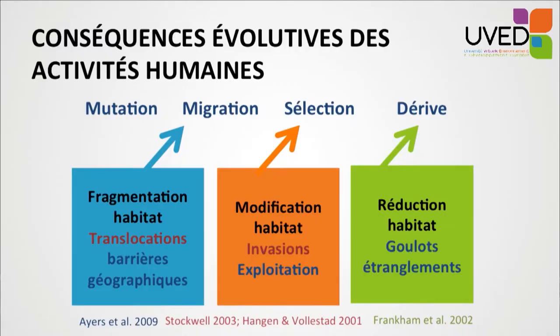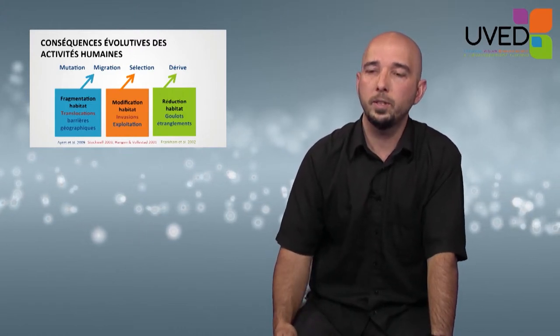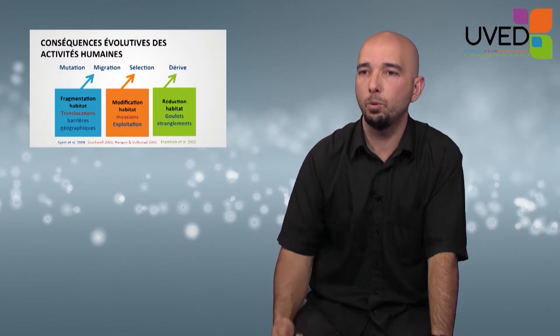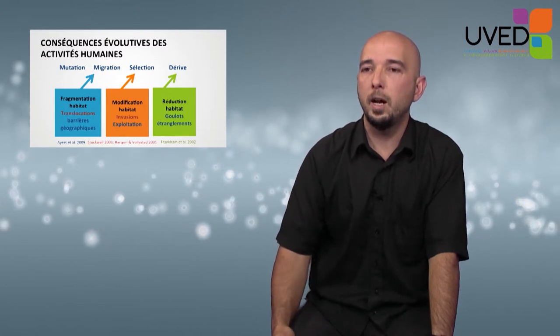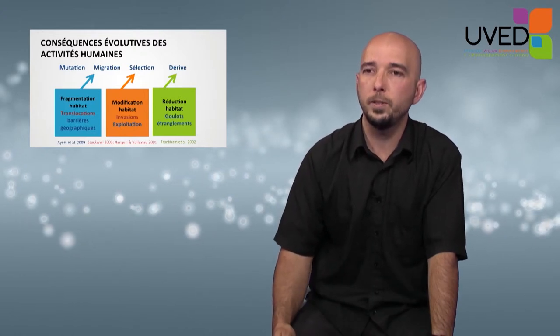Genetic drift corresponds to random evolution and leads to the loss of some genetic variants. The loss is all the more rapid when the population is small. The loss of genetic variation will be influenced by the reduction of available habitat and fluctuations in demographic population, which in the long run leads to a smaller effective genetic size and more rapid loss of genetic variation.